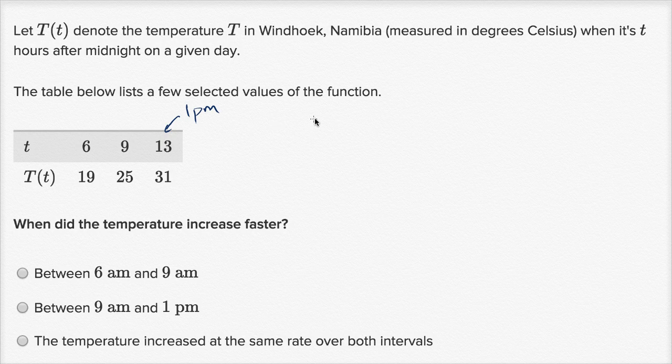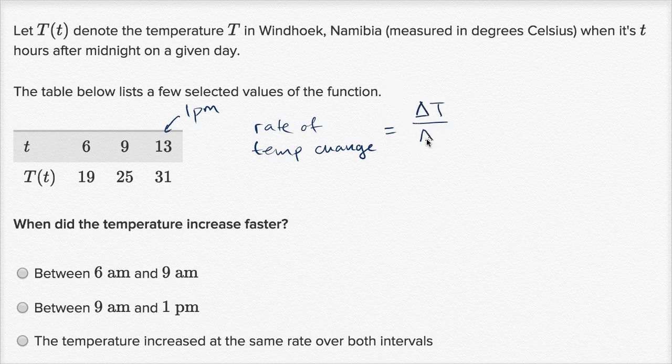If we want to figure out the rate of increase, the rate of temperature change, this is going to be equal to our change in temperature, capital T, over our change in time. This triangle, that's the Greek letter delta, represents change in, so change in temperature over change in time.